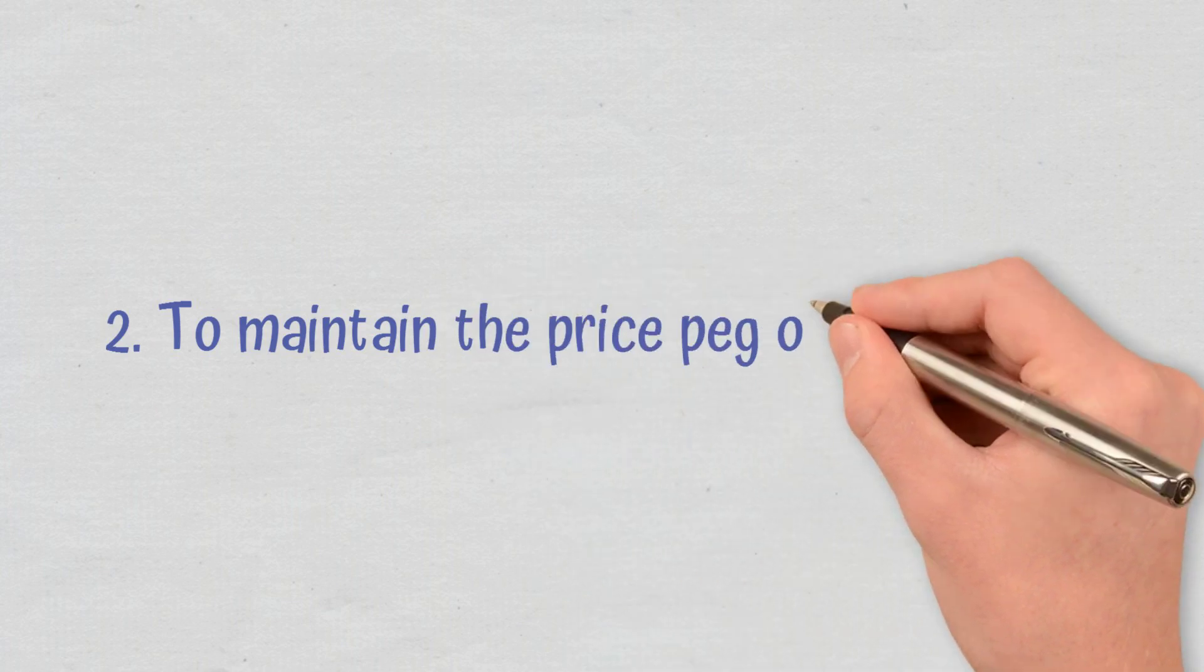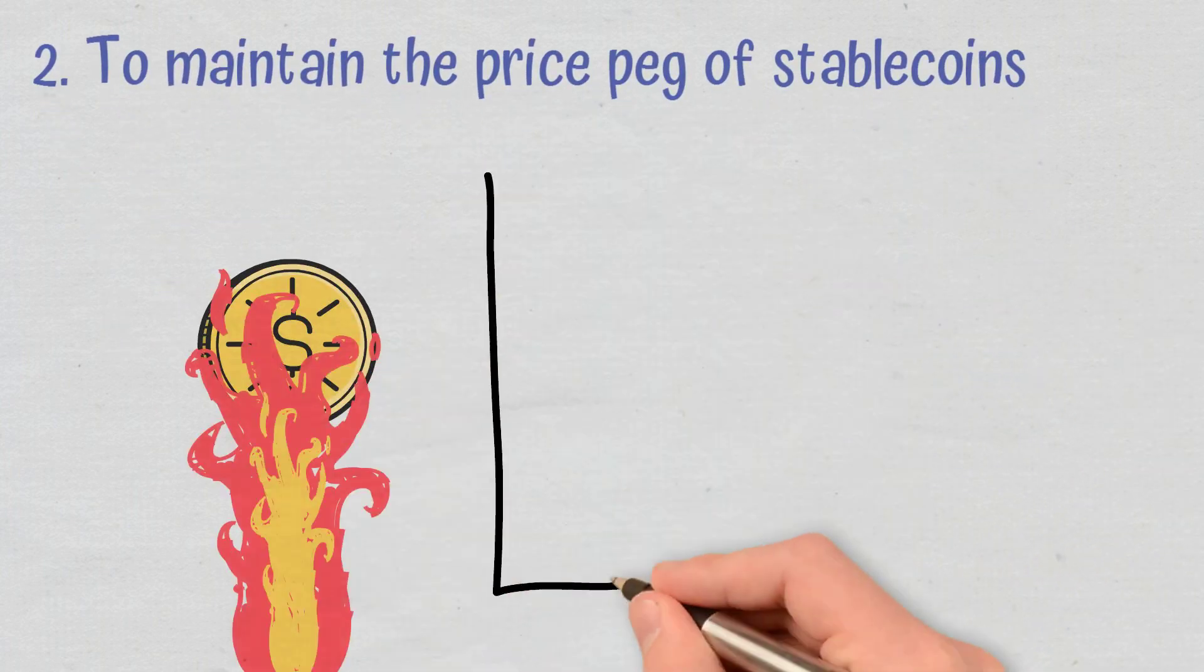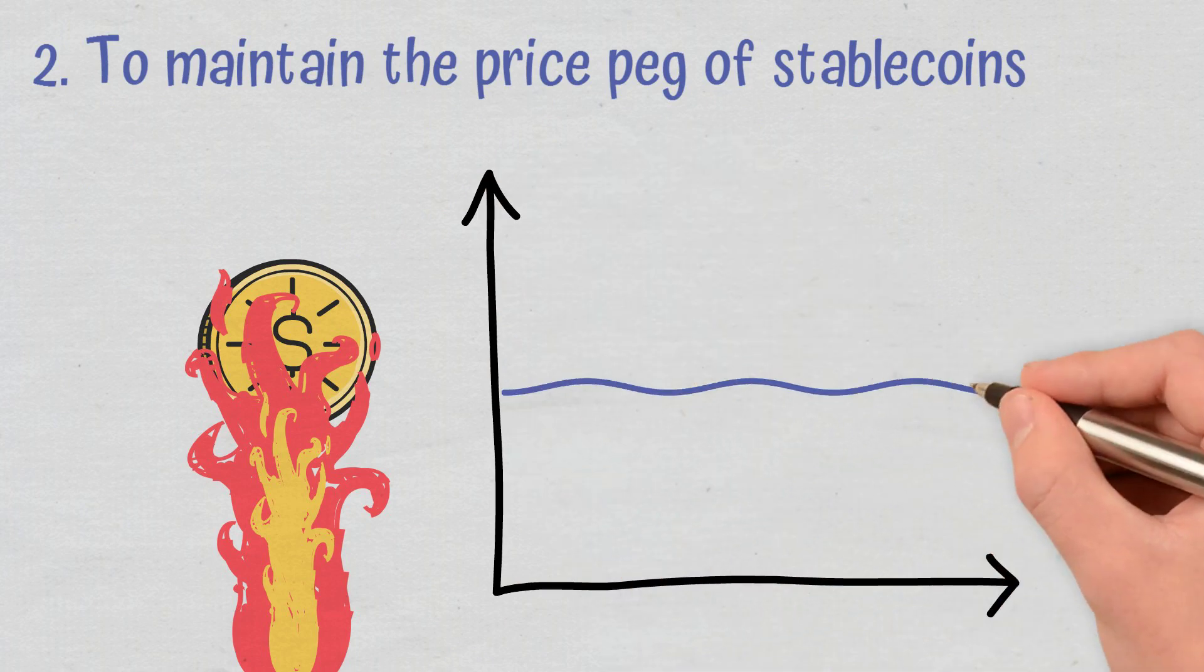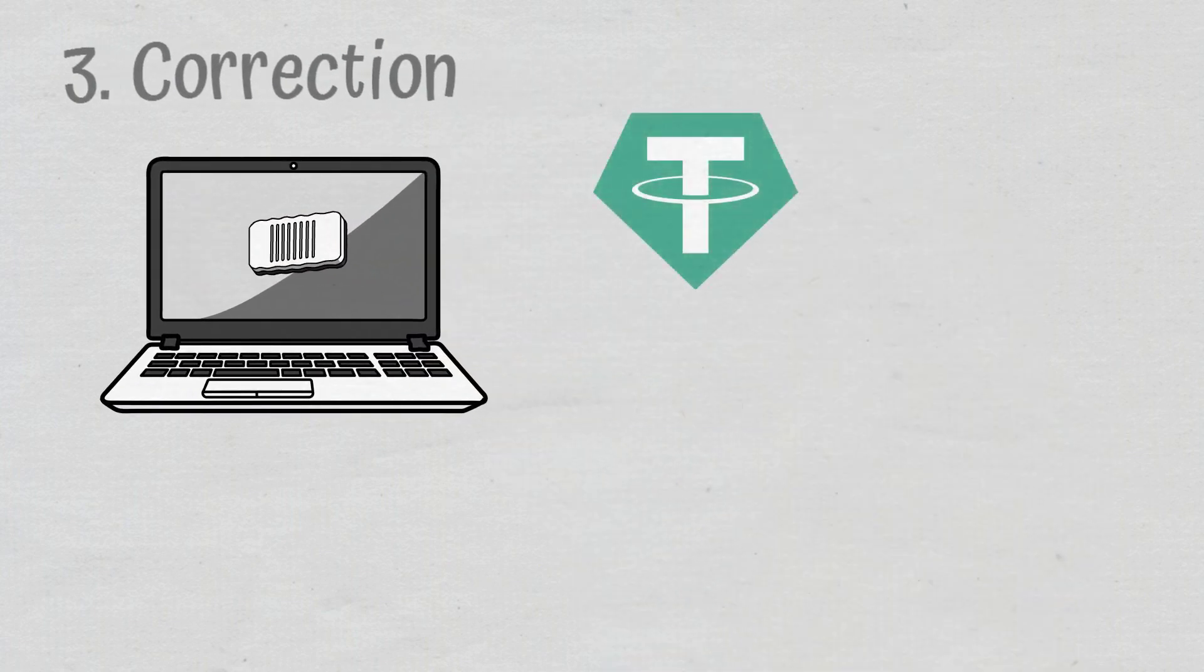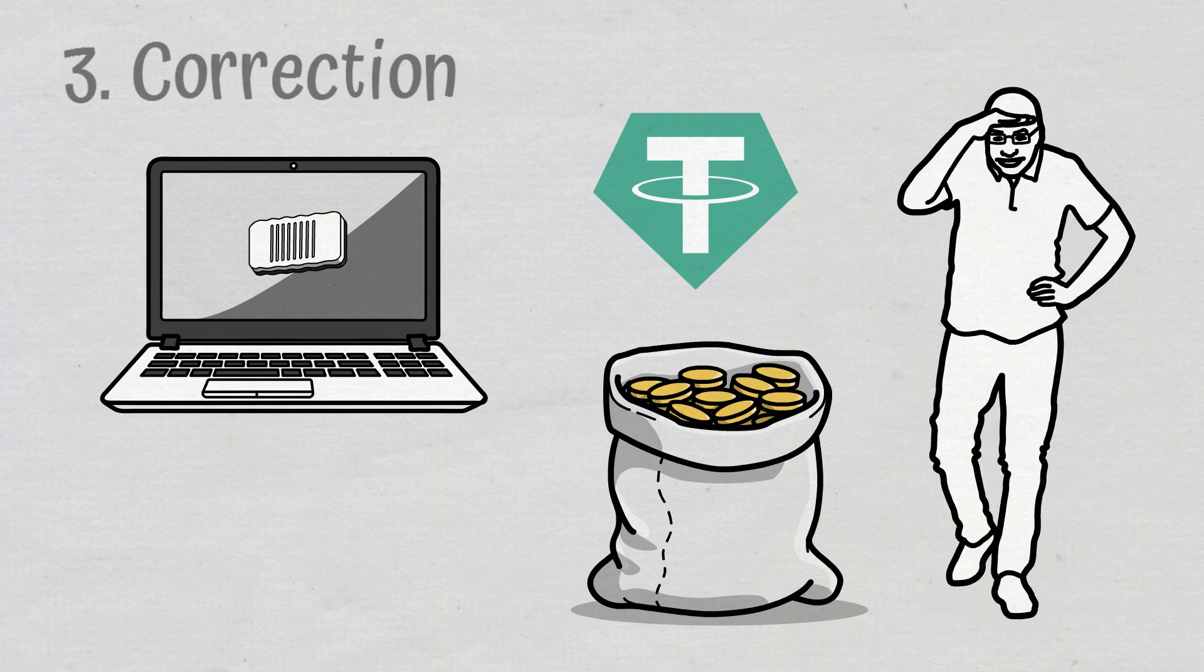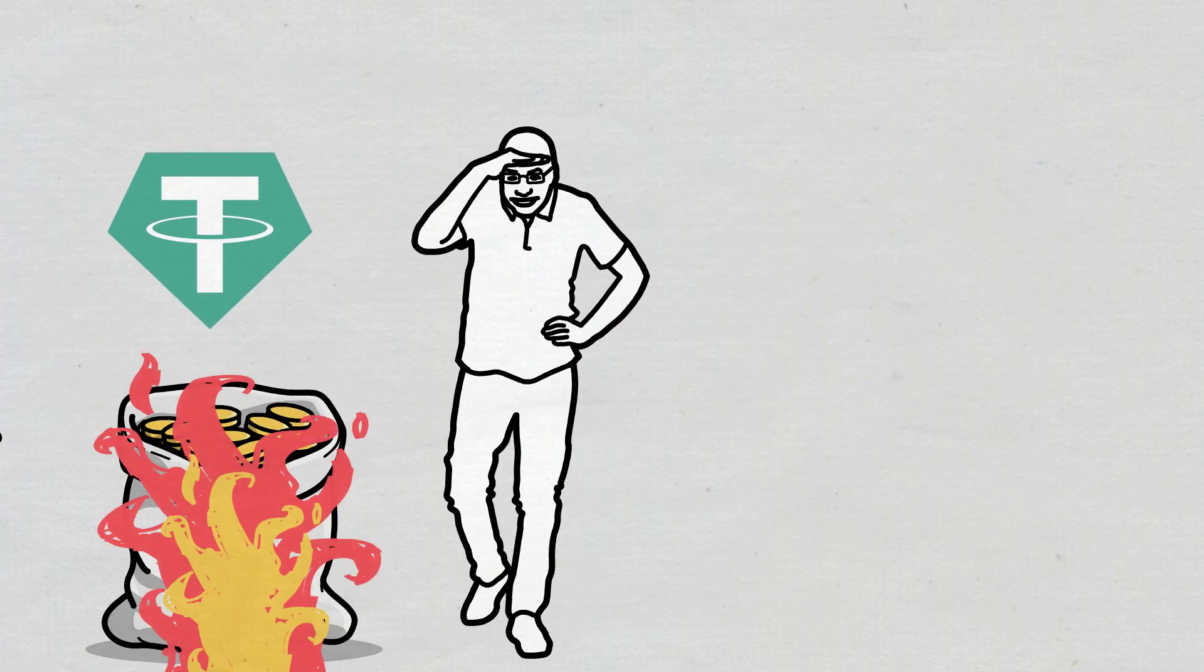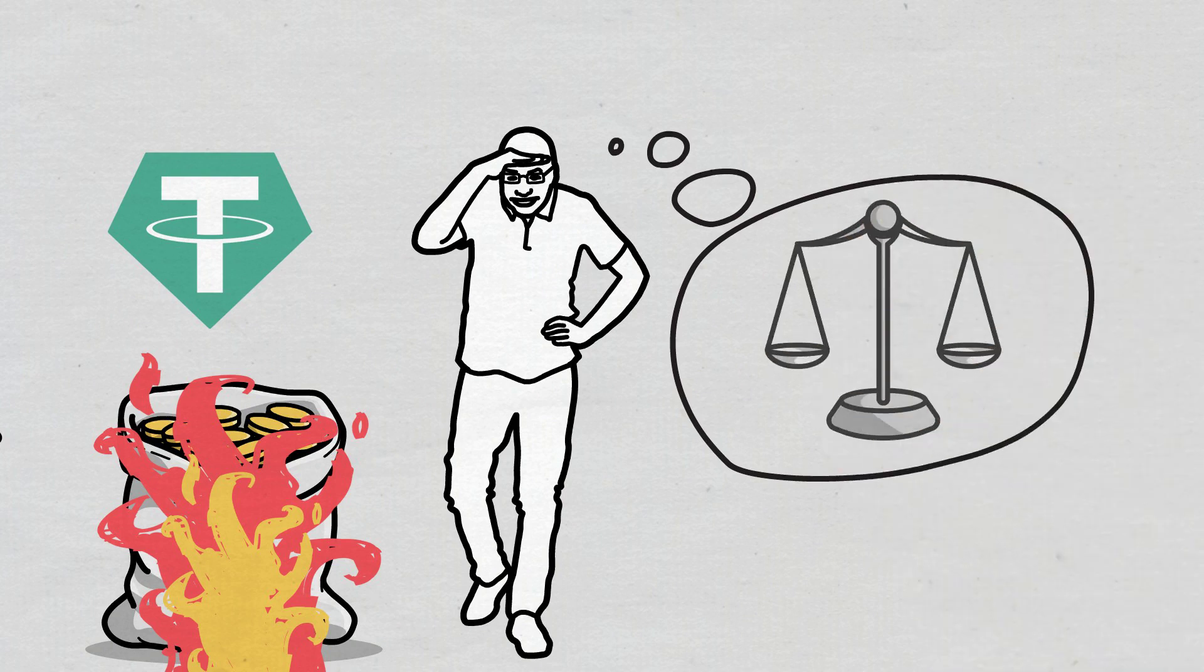To maintain the price peg of stablecoins. Here, coins are burned to keep the price of an asset at a near constant level. Correction: this enables a project to correct a mistake. For example, Tether created 5 billion dollars in USDT by accident. These tokens had to be burned to prevent the new supply from destabilizing the one-on-one peg with the US dollar.